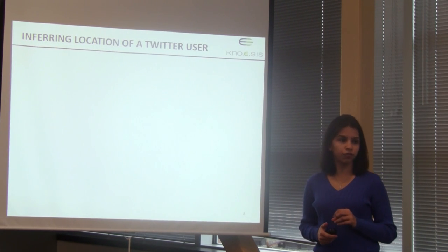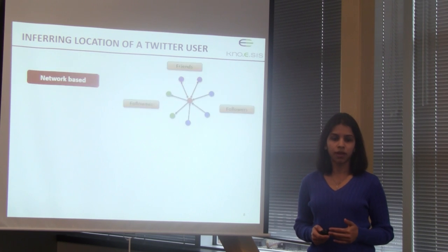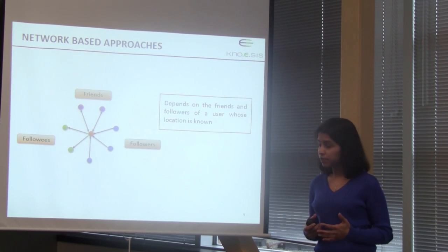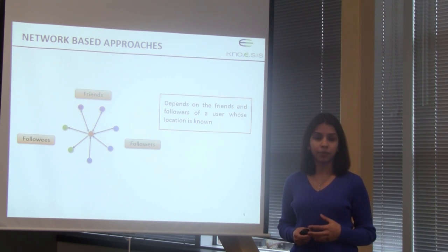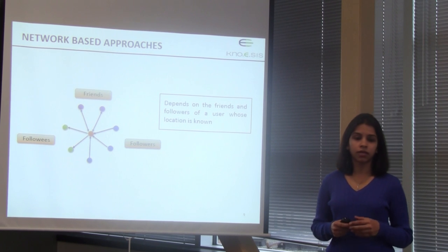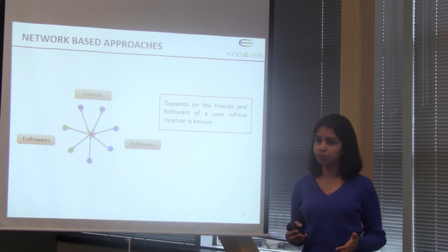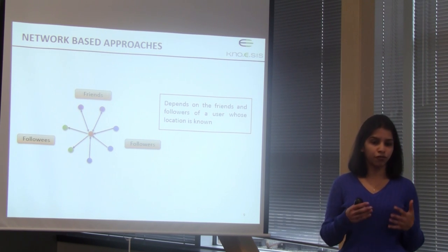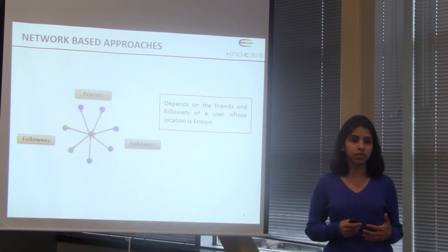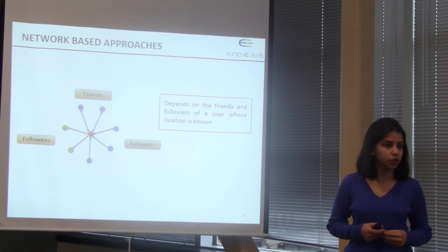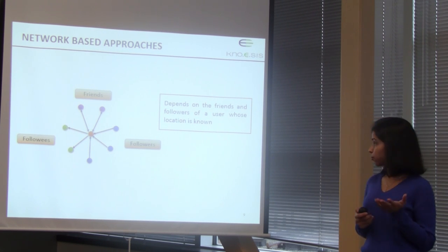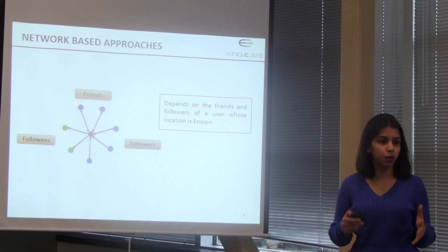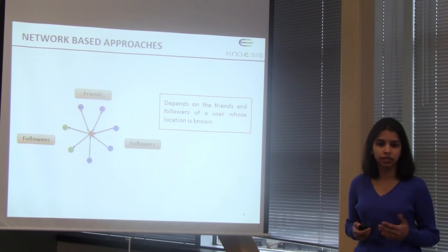The existing approaches to infer user location can be grouped into two classes: network-based approaches and content-based approaches. Network-based approaches exploit the network of a Twitter user to predict their location. They use a training dataset of users whose location has already been published and identify hidden patterns in communication between users and their friends, followers, and followees. The drawback is that a significant number of users in the network must have published their location.